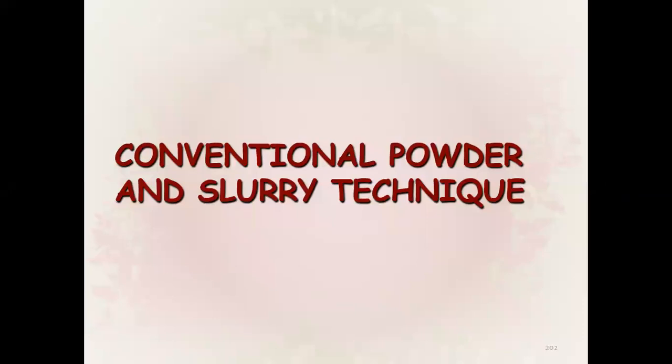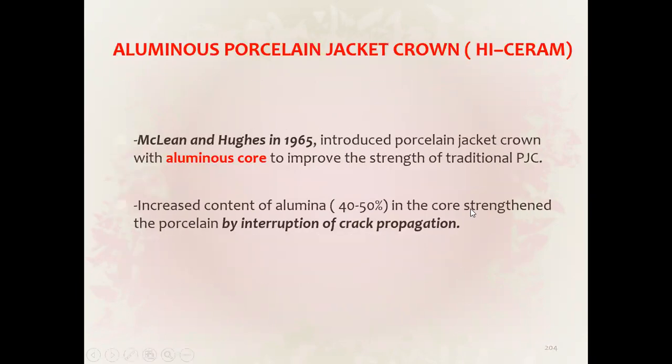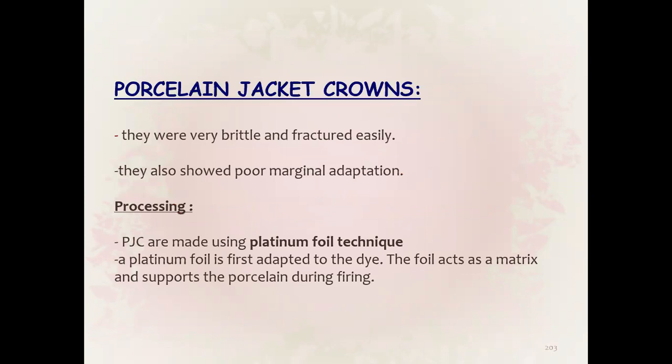Conventional powder and slurry technique: porcelain jacket crowns are very aesthetic but fracture easily with poor marginal adaptation. Processing uses the platinum foil technique — platinum foil is adapted to the die and acts as a matrix, supporting the porcelain during firing.